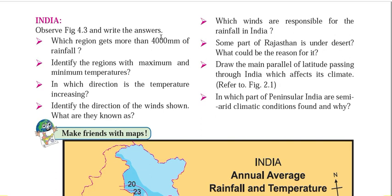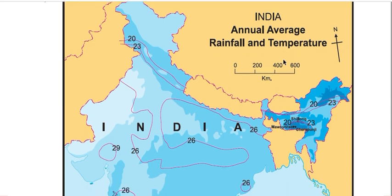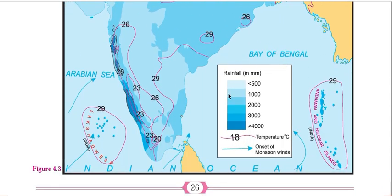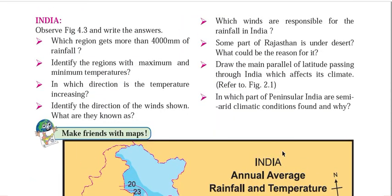We are going to see a few questions based on this map of India, which shows India's annual average rainfall and temperature. The legend uses different color codes for rainfall — this is a choropleth map. The dark blue color shows rainfall greater than 4000 mm and the very light blue shows less than 500 mm. The red contour lines show isotherms — temperature in degrees Celsius — and the blue arrows show the direction of monsoon winds.